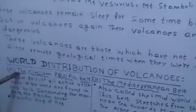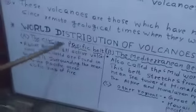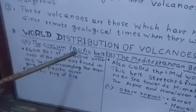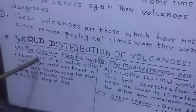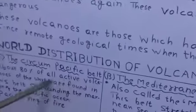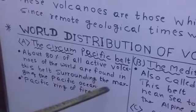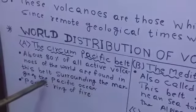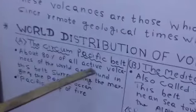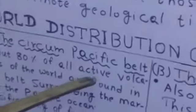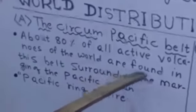Now we will see the distribution of all these volcanoes one by one. The first one is the circum-pacific belt. This circum-pacific belt is very wide and large in area. About 80% of all active volcanoes of the world are found in this belt, surrounding the margin of the Pacific Ocean.